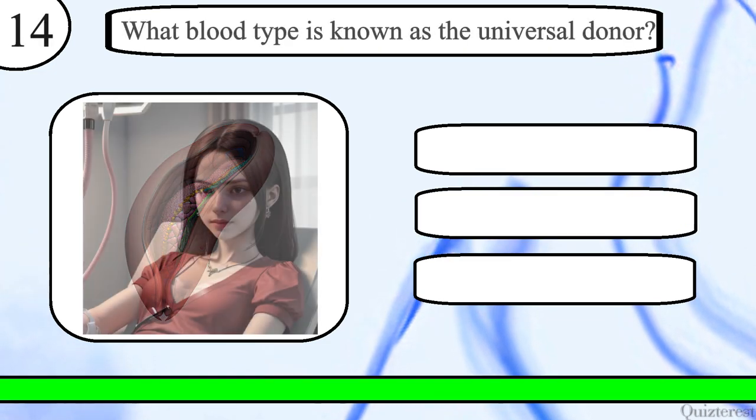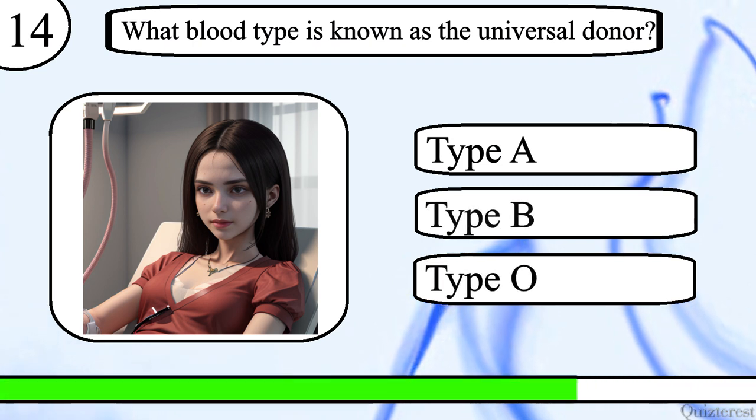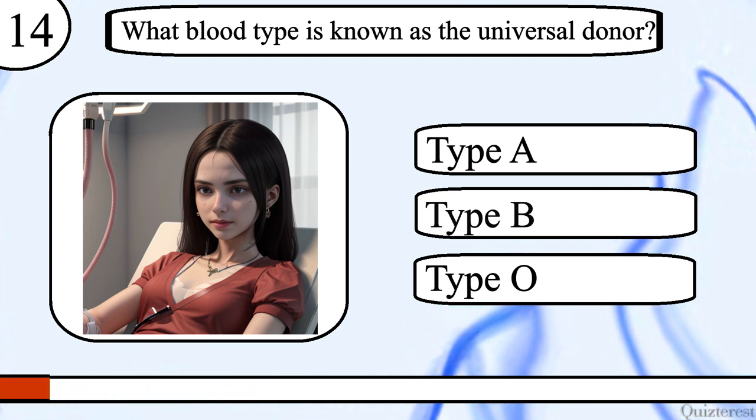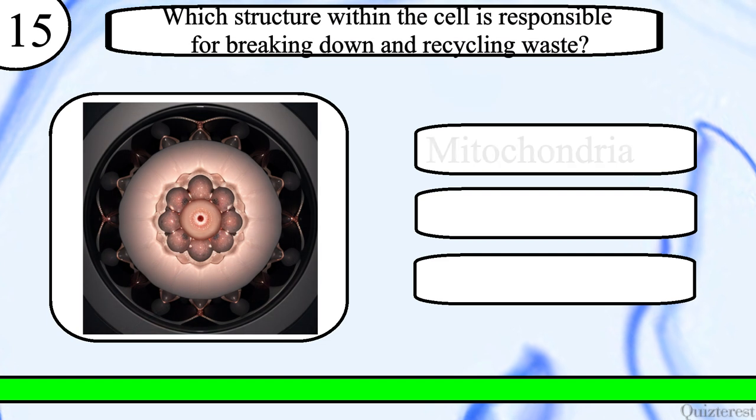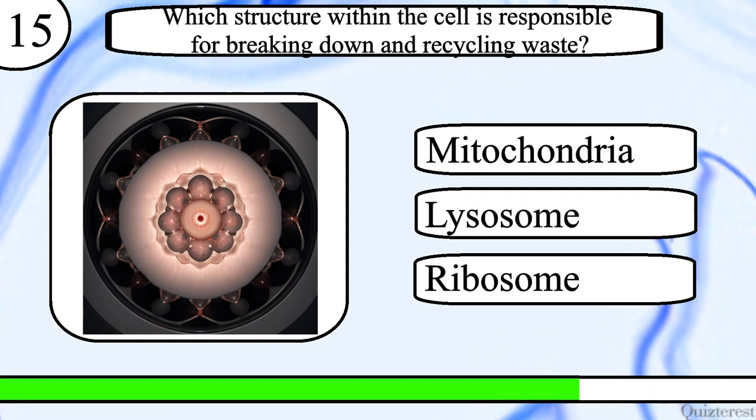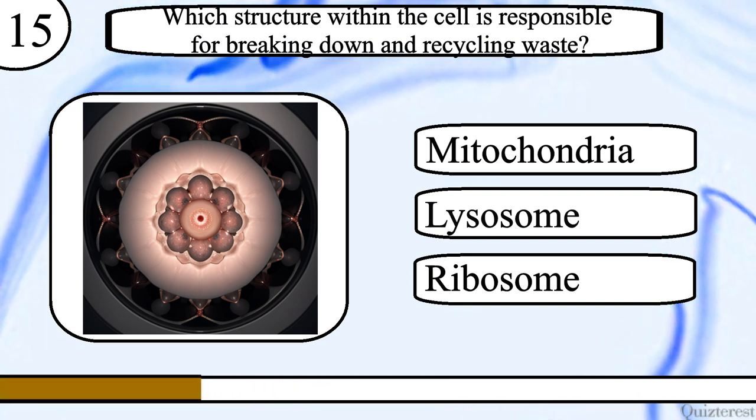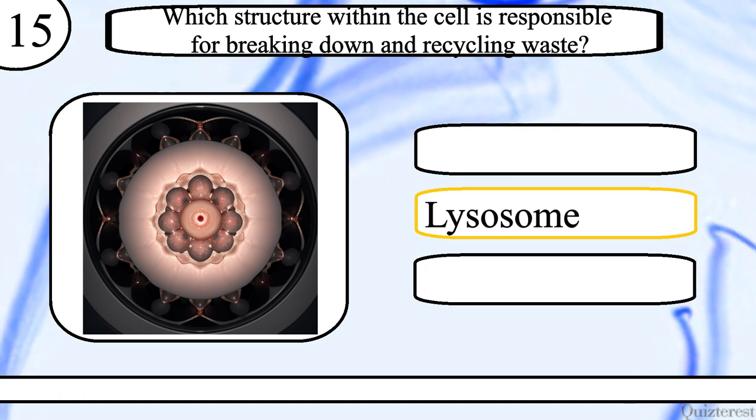Question 14. What blood type is known as the universal donor? Type A, type B or type O? The correct answer is type O. Question 15. Which structure within the cell is responsible for breaking down and recycling waste? Mitochondria, lysosome or ribosome? The correct answer is lysosome.